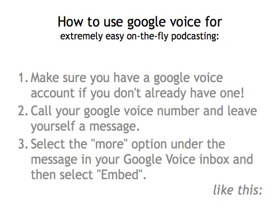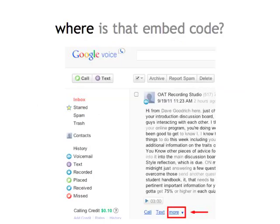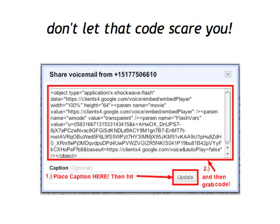Now go to your Google Voice account, and once you see the message you just left, you can grab the embed code. Select the More option below the message itself. Then copy that embed code into your clipboard by selecting all the text, right-clicking, and selecting Copy. Do note that if you want this embedded audio to have a title, you should put a caption in and select Update, then copy that new embed code.